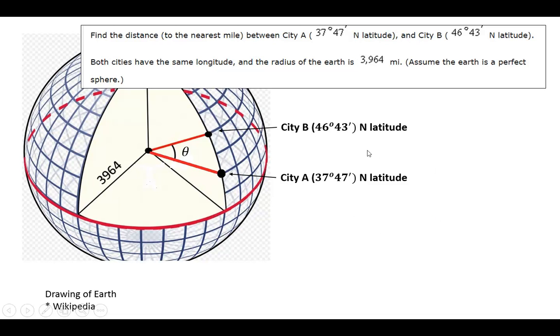There are several ways to approach this. I chose to convert degrees and minutes to decimal degrees: 43 divided by 60 gives the decimal part. Doing the same for 37 degrees 47 minutes, then subtracting the two values, the angle is 8.934 degrees.